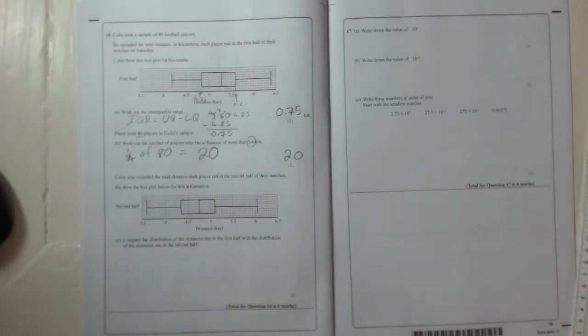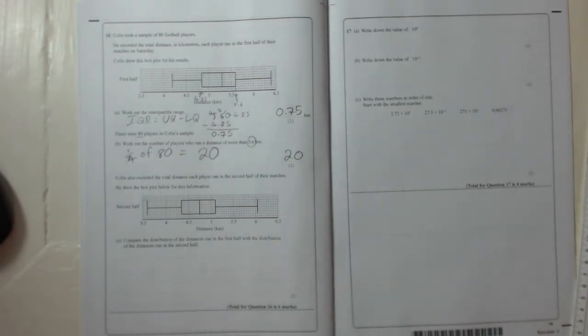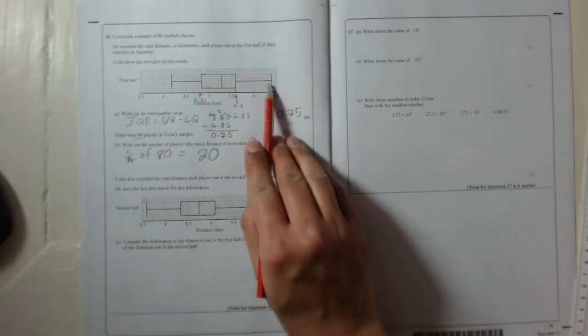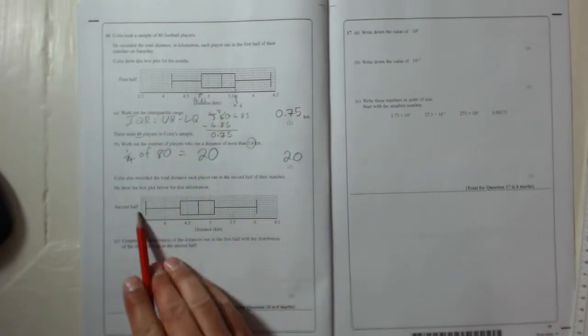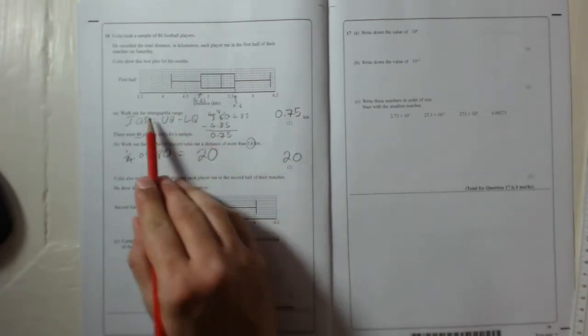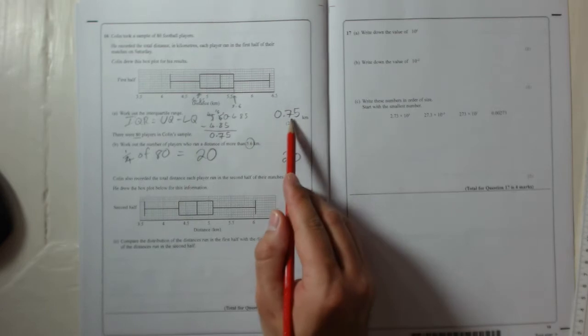Okay, so you want to make two comparisons at least. You want to talk about the medians and one of the measures of spread. Now the measures of spread are the range, biggest take away smallest, or the interquartile range, like we've already worked out here is 0.75.